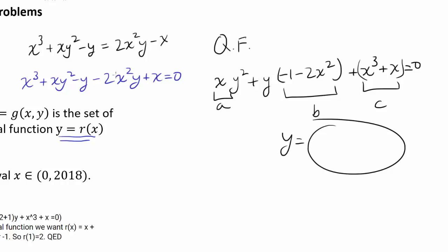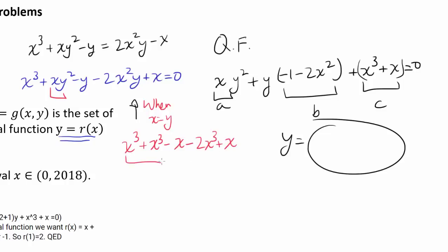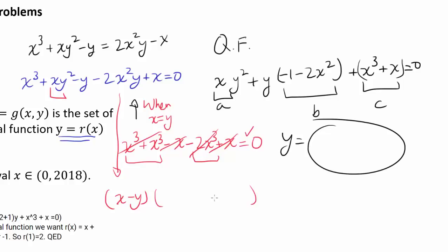Another possible way of getting the answer is to realize that when x is equal to y in this equation, we have x cubed plus x cubed minus x minus 2x cubed plus x, and we get 2x cubed minus 2x cubed which cancel out and negative x plus x which cancel out as well, giving us 0. So when x is equal to y, the equation is satisfied, telling us that (x minus y) has to be a factor of the left side expression. You can then use synthetic division to find the second factor.